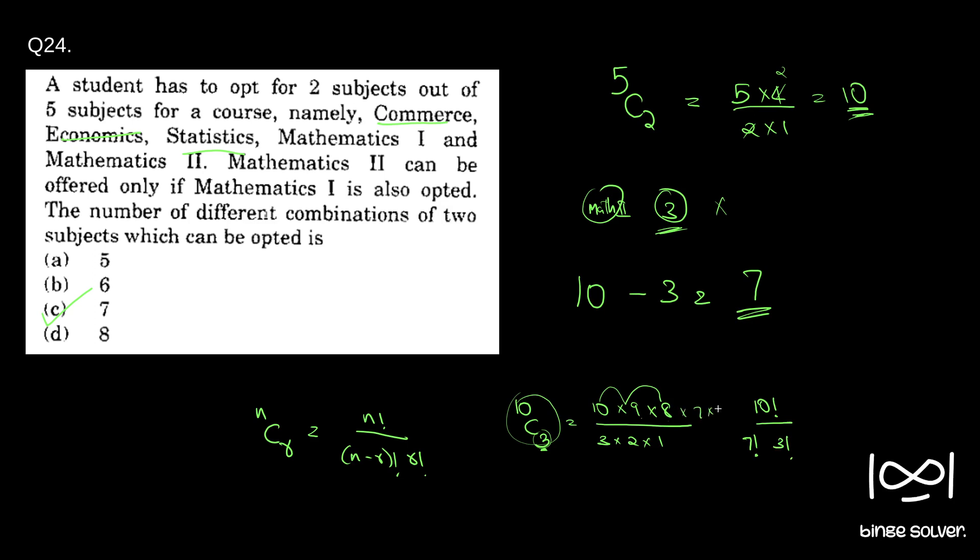The 7! term gets cancelled with 7 factorial, which is why it's not there. That's why I used 5×4 divided by 2×1 here. That is how this was formed.